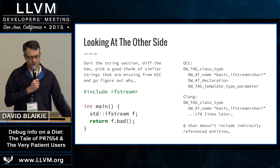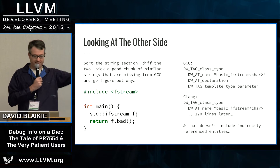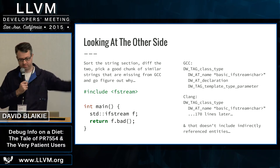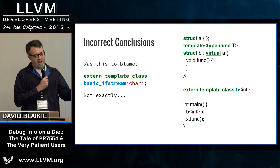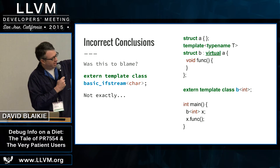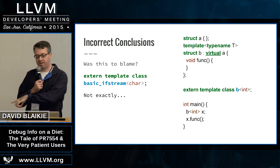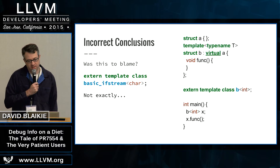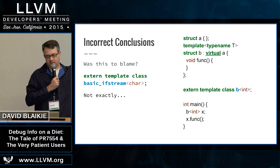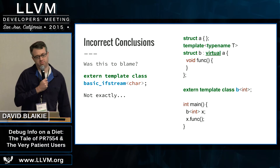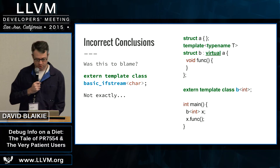GCC's debug information describes only a declaration of basic_ifstream — no definition, no members, no allocators, no anything. I thought: well, that's cheating. I figured maybe it was the external template thing that allows the compiler to put the definition of all the template code in one place and rely on it from everywhere else. But when I simplified the example further, virtual turned up — and that virtual keyword was critical to making GCC skip all of the debug information.